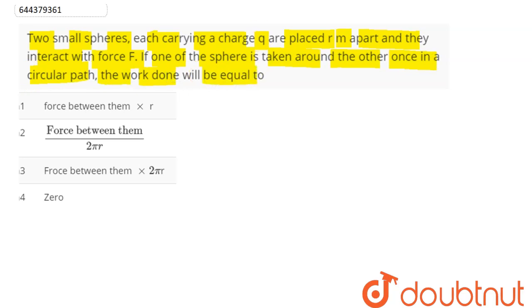So here we have two small spheres. One sphere of charge Q is placed at the center and the other sphere of the same charge Q is moved in a circular path at radius R.